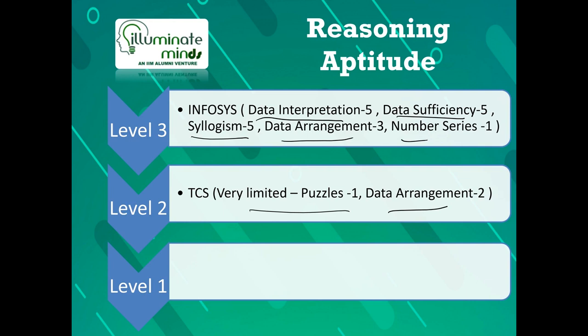The additional Infosys questions include data arrangement — three questions appearing in the problem solving section — and possibly one number series question, though that is not guaranteed. For Infosys, all five chapters I mentioned are at level 3, meaning the difficulty level is on the higher side — level 1 is the lowest, level 2 is medium, and level 3 is difficult. For TCS, reasoning is very limited: possibly one puzzle question and one to two data arrangement questions, or reasoning may be entirely absent.